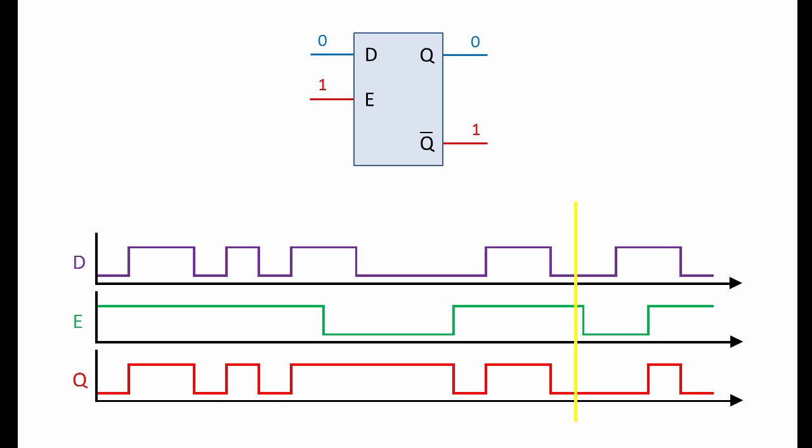On this diagram, we see E going low again, so Q is no longer following D. Until, of course, E goes high again.